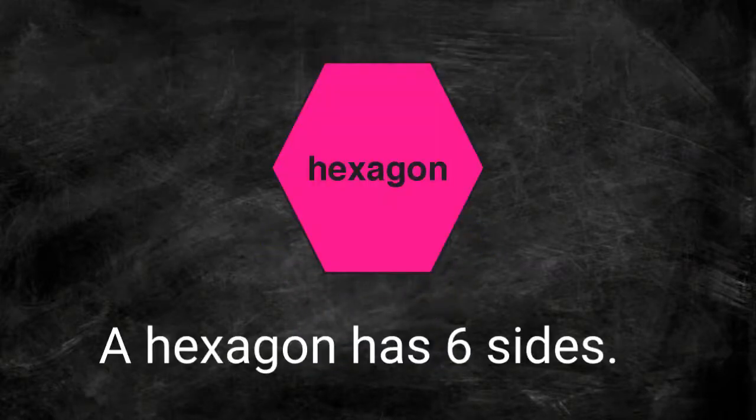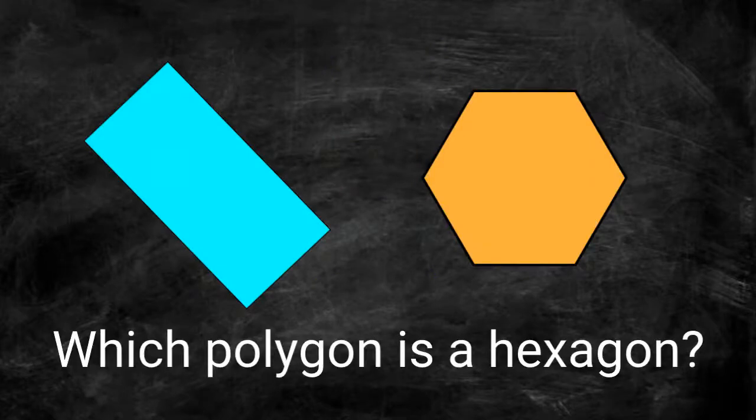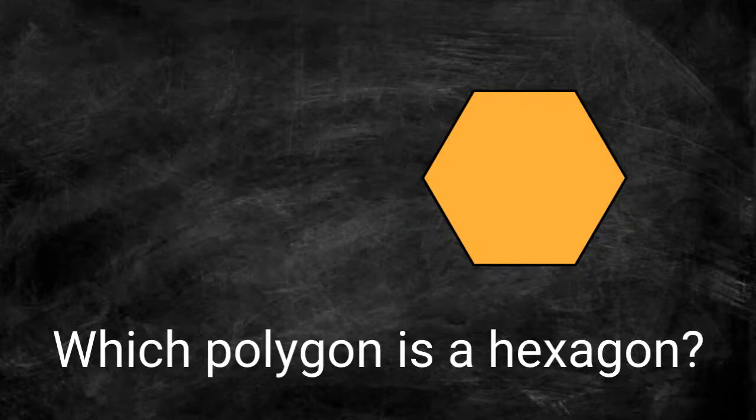The last polygon we are reviewing is a hexagon. A hexagon has six sides and six vertices. Which polygon is a hexagon? This is a hexagon because of its six sides.